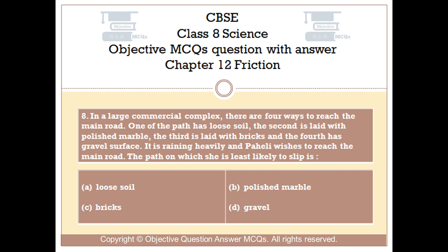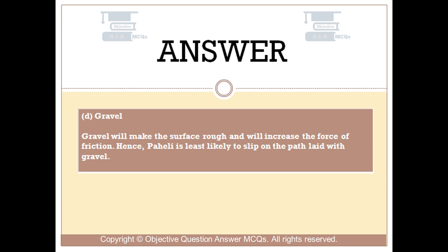The right answer is Option D: Gravel. Gravel will make the surface rough and will increase the force of friction. Hence, Pahali is least likely to slip on the path laid with gravel.